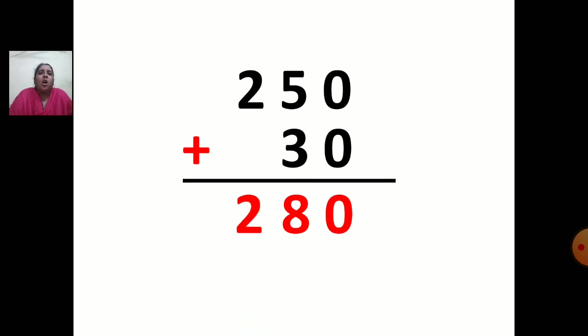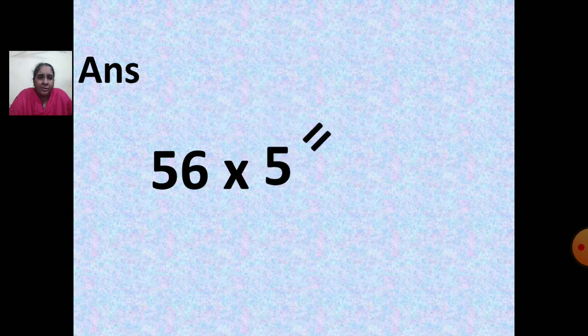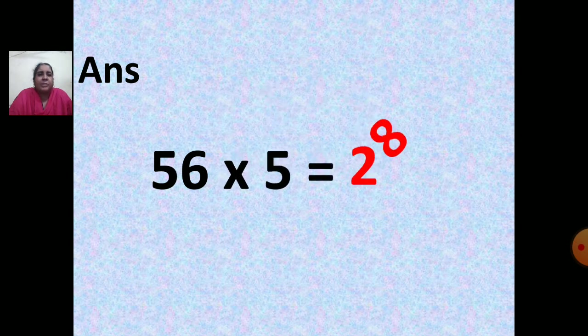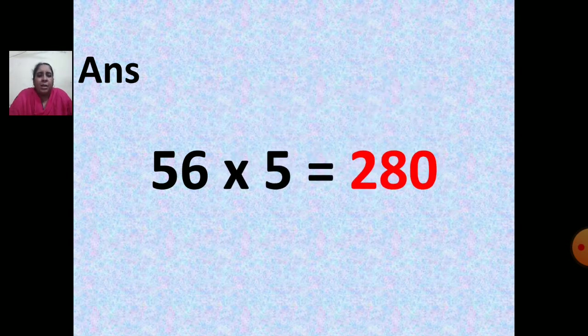How are you going to write this? 56 multiplied by 5 is equal to 280.